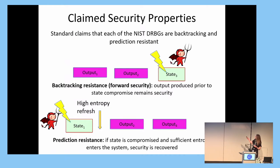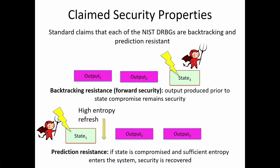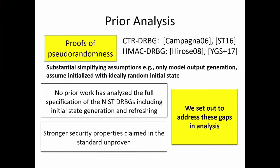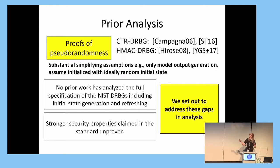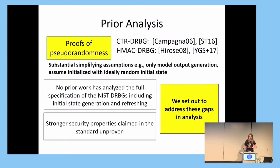The second property, prediction resistance, says that if the state of the generator is compromised and sufficient entropy enters the system via refresh calls, then security should be recovered. We said that these generators have received surprisingly patchy formal analysis to date. While there have been proofs that Counter-DRBG and HMAC-DRBG produce pseudo-random output, these all make substantial simplifications — they only model output generation, not initial state generation and refreshing, and they assume the generators initialize with an ideal random state. As far as we are aware, no prior work has analyzed the full specification, and the stronger security properties claimed in the standard are unproven.